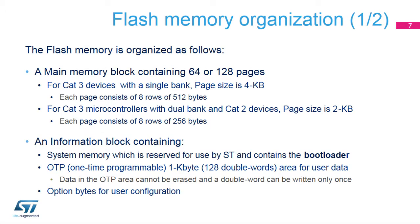The main memory contains 64 or 128 pages depending on the category of the microcontroller. For category 3 with single bank architecture, page size is 4 kilobytes and each page consists of 8 rows of 500 bytes. For category 3 with dual bank architecture and category 2, page size is 2 kilobytes and each page consists of 8 rows of 256 bytes.